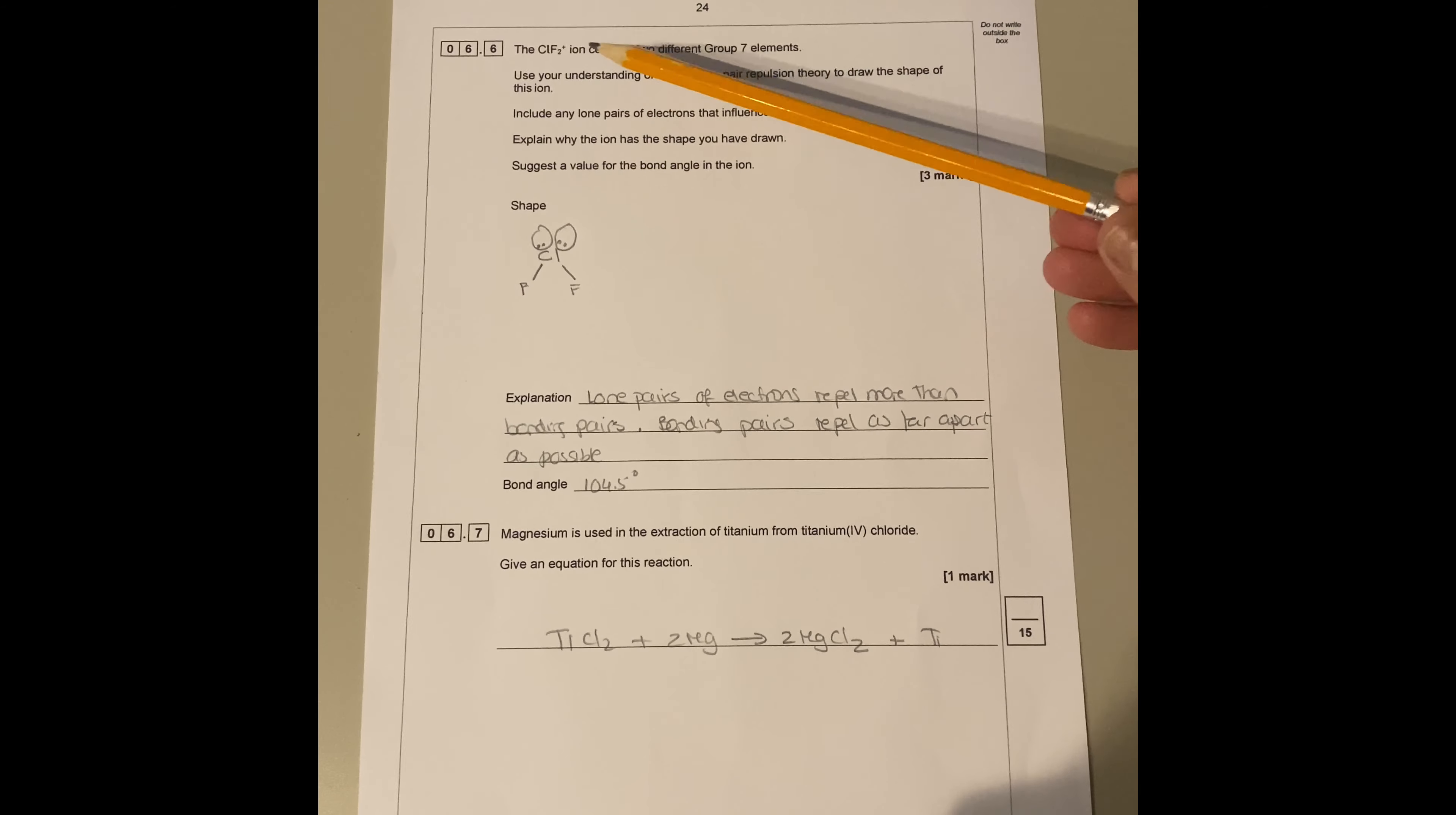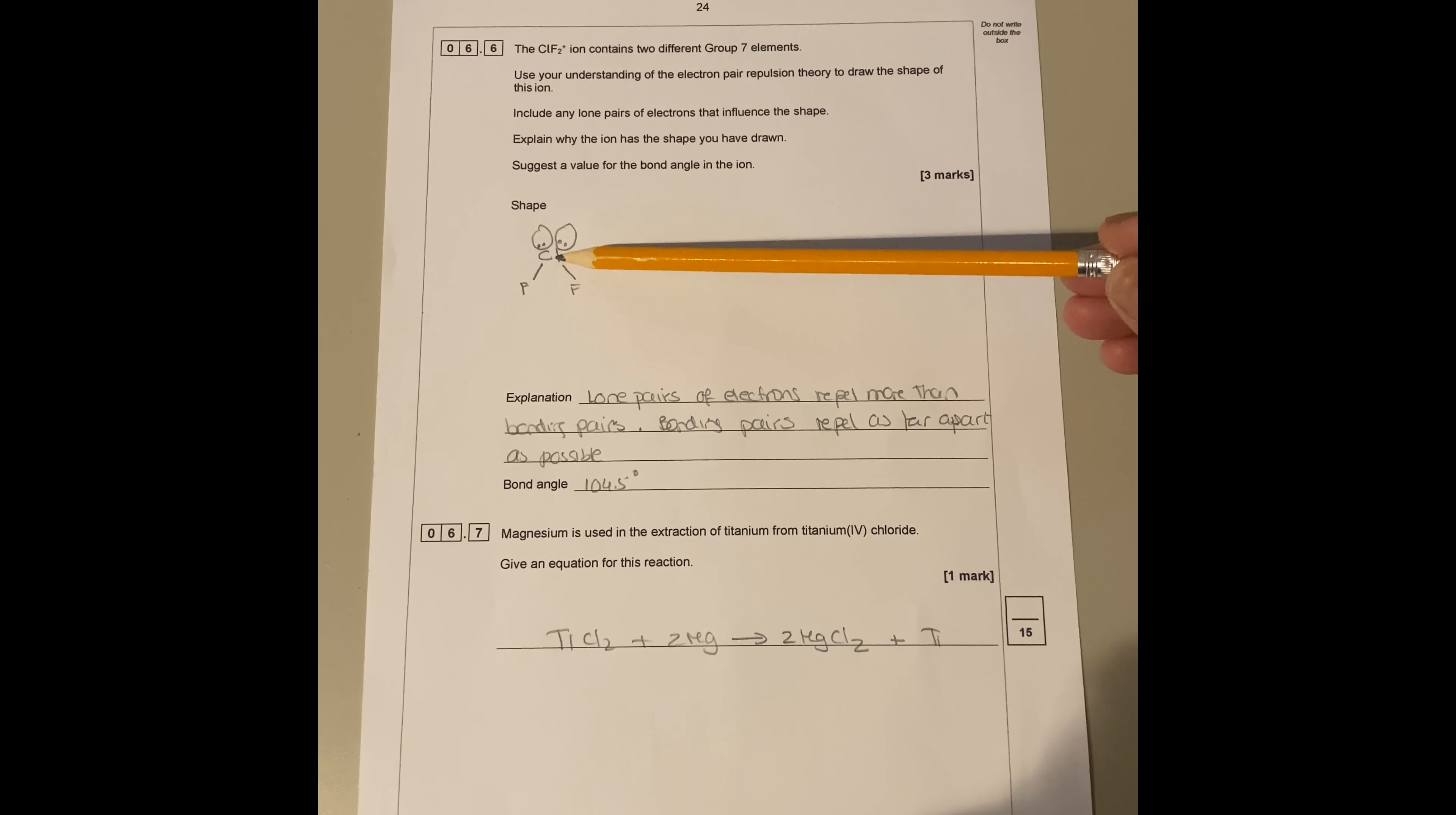Question 6.6: The ClF2 plus ion contains two different group seven elements. Use your understanding of the electron pair repulsion theory to draw the shape of this ion. Include any lone pairs of electrons that influence the shape. Explain why the ion has the shape you have drawn and suggest a value of the bond angle. The shape is going to be Cl with fluorine, fluorine, and you got two lone pairs. You have to explain: lone pairs of electrons repel more than bonding pairs because bonding pairs repel as far apart as possible. Then the angle is going to be 104.5 because it's the same as the water molecule. You got two bonding pairs and two lone pairs based on that.